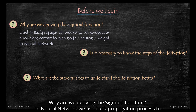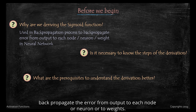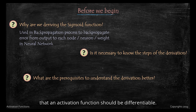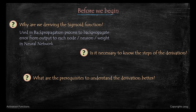The first question: why are we deriving the sigmoid function? In neural networks, we use the back propagation process to back propagate the error from output to each node, neuron, or weights. We need to derive the activation function, and it is a must requirement that an activation function should be differentiable.